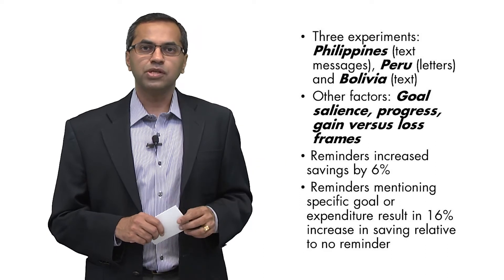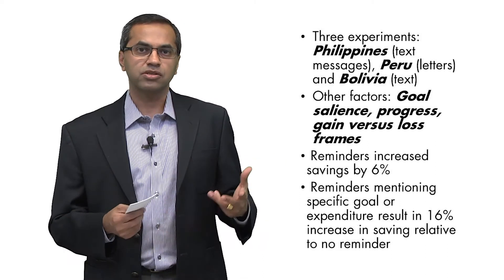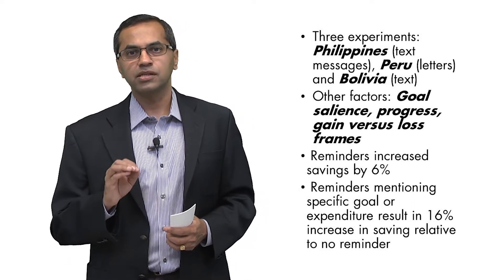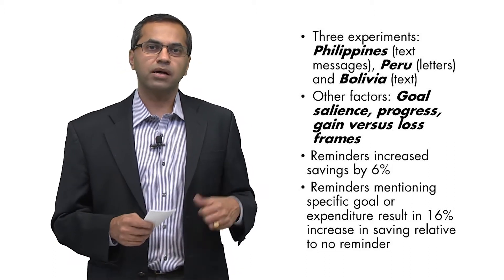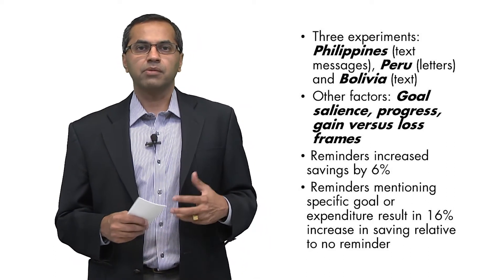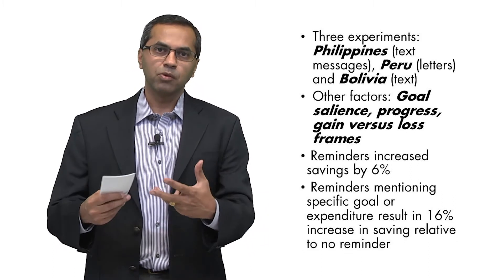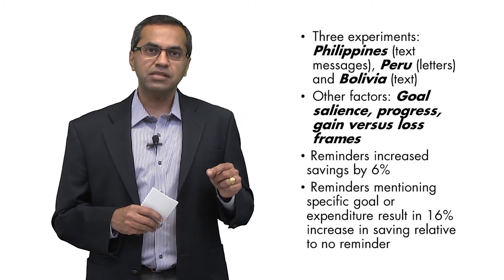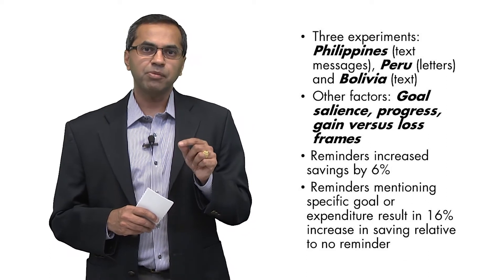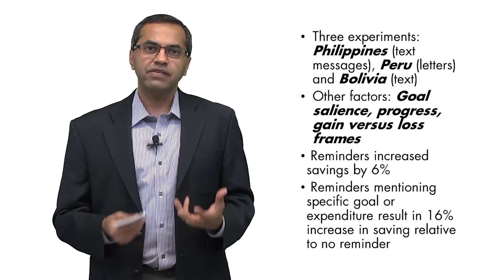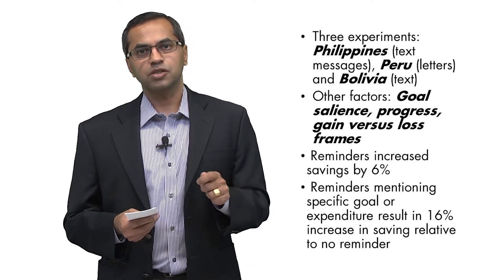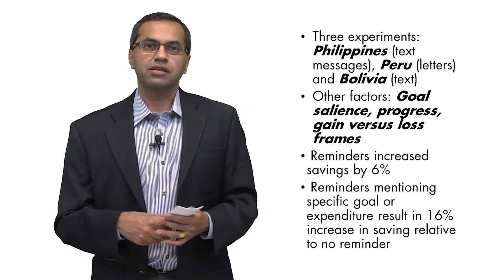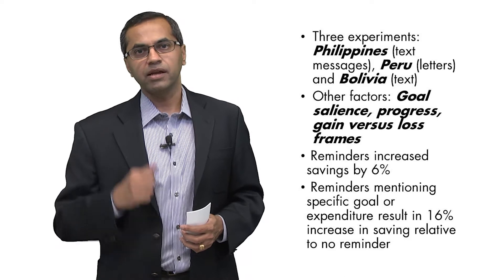What these researchers found using a randomized control approach in these three different experiments was that simply sending reminders increased savings by about 6%. These researchers also tried other things through the reminders. They tried making the reminders specific and concrete, reminding people what their goal was, framing the message as a gain versus a loss. What they found was that to the extent the reminders are specific and they remind people of a very concrete goal, that savings goes up by 16% and not just 6%. So simple reminders served as a nudge. The bottleneck here was that the decision was passive. The reminder made it active.